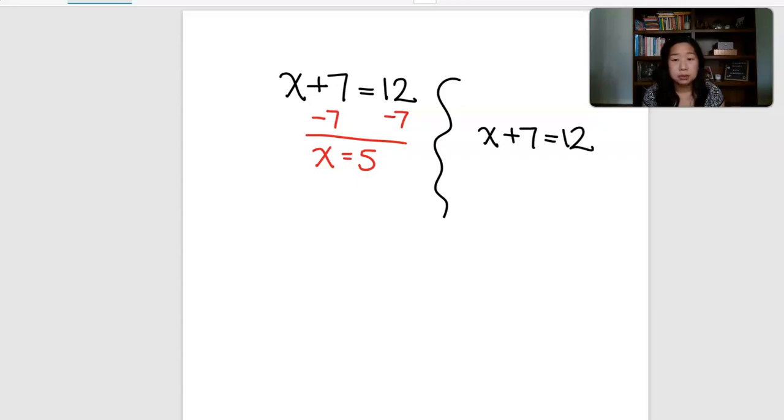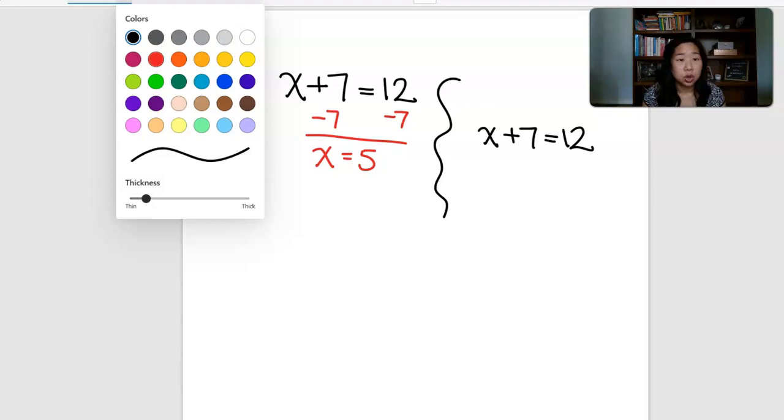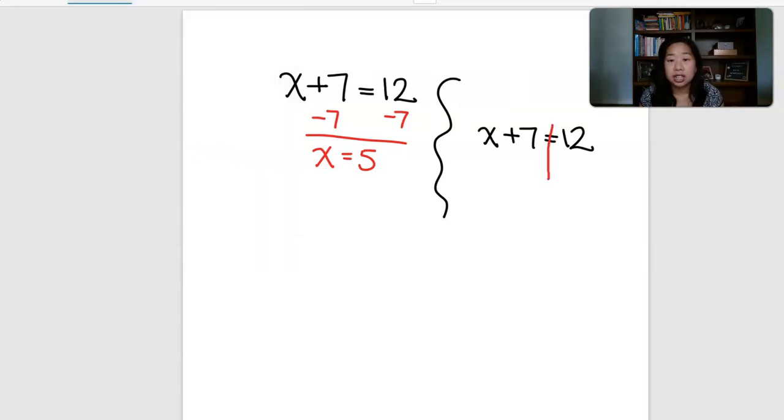We're gonna take the same exact problem: x plus 7 equals 12. The thing that I tell my students to do is what I call a T-chart. You're gonna draw a line through the equal sign and then make an upside down T like this. In theory the equal sign is like to remind you to bring down the equal sign.